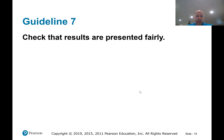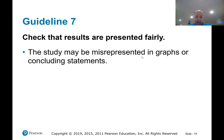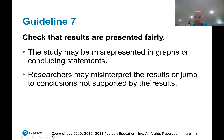Guideline seven: check that results are fairly presented. The study may be misrepresented in graphs or concluding statements. Graphs may mislead or misrepresent what the data says, or the concluding statements may not really match what the study did. Researchers may misinterpret a result or jump to conclusions not supported by the data.